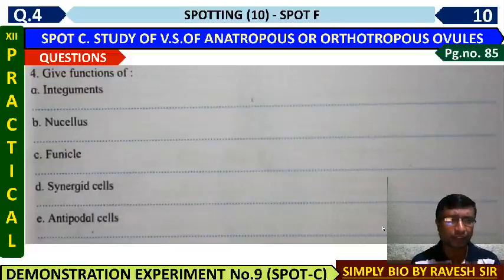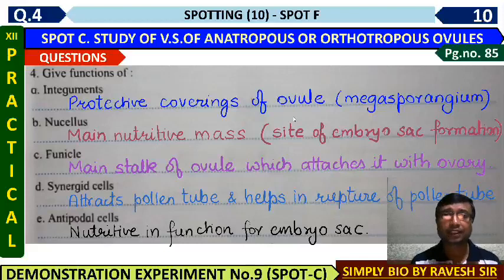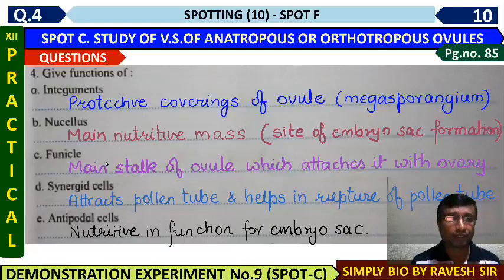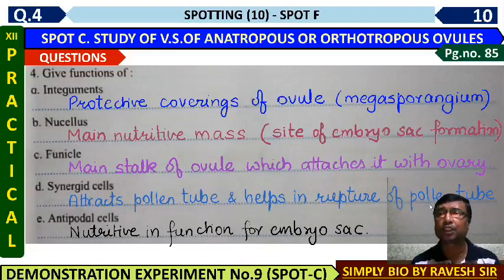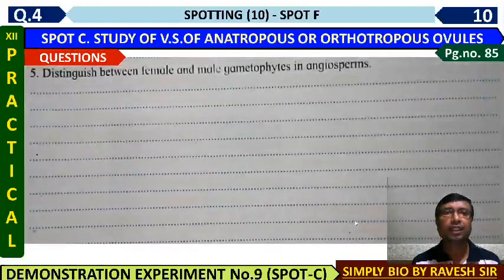What are the functions of the integument, nucellus, funicle, synergid cells, and antipodal cells? Integument is the protective covering of the ovule and later becomes the seed coat. Nucellus is the main nutritive mass inside which the embryo sac forms; after embryo genesis, it is used as nutrition by the embryo. Funicle is the stalk connecting the ovule to the ovary wall; later it becomes the stalk of the seed. Synergids are lateral to the egg cell, attract the pollen tube, and help rupture it using the filiform apparatus.